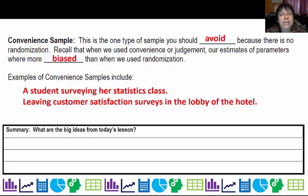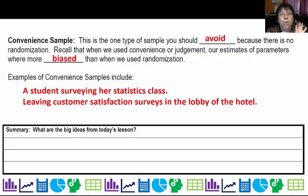The big ideas from today's lesson: we talked about simple random sampling, cluster sampling, stratified sampling, systematic sampling, and the horrors of convenience sampling.